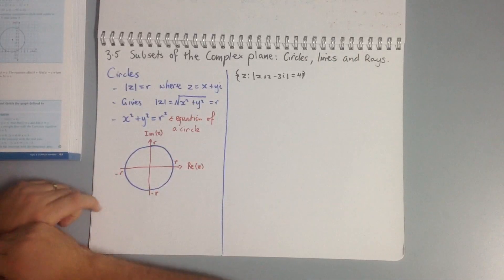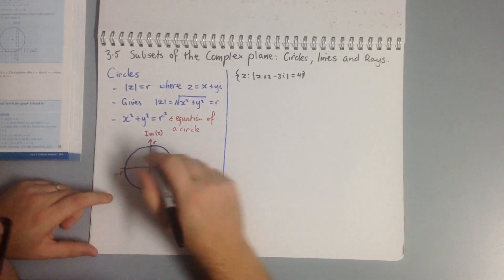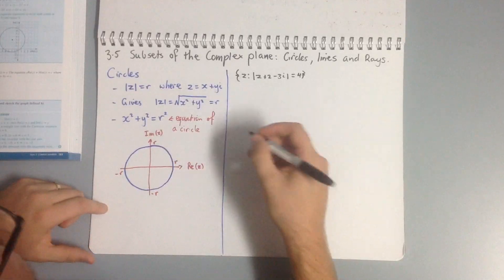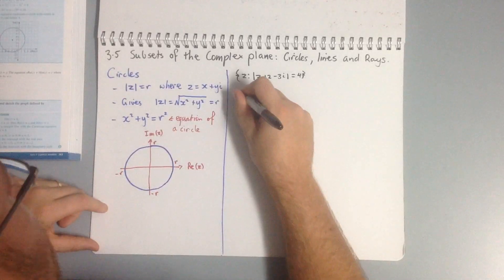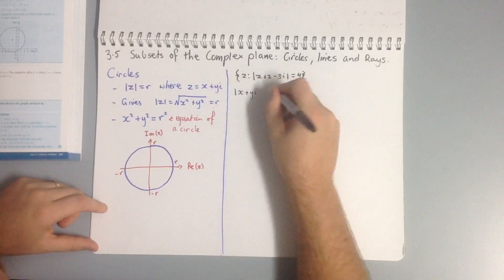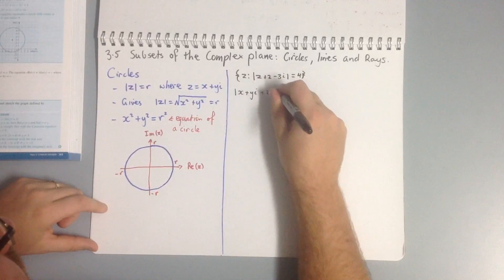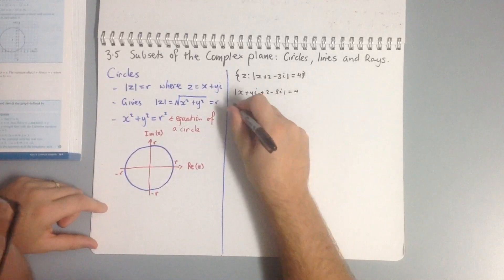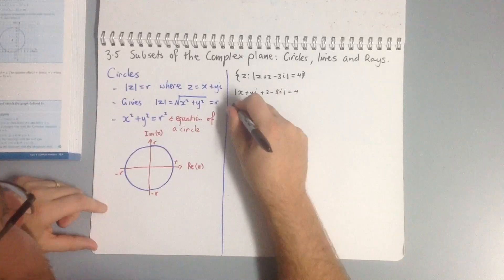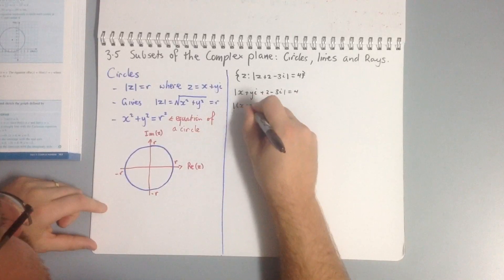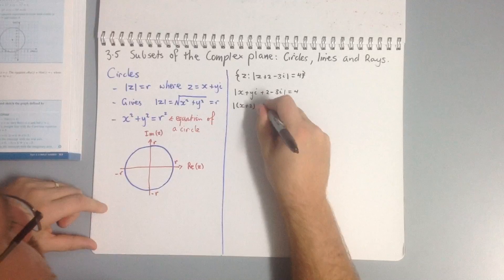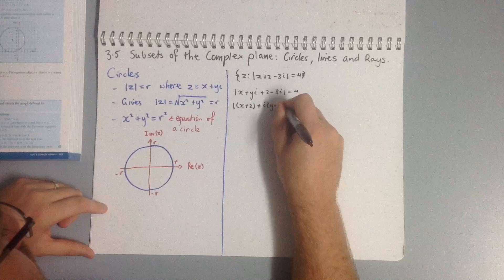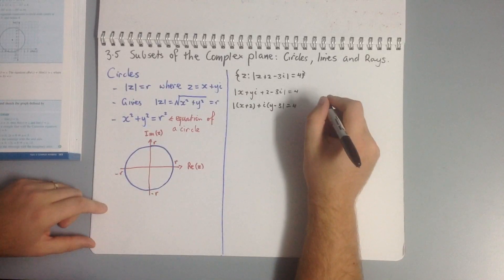We replace z with x plus yi, giving us the modulus of x plus yi plus 2 minus 3i equals 4. Collecting like terms gives us the modulus of (x plus 2) plus i(y minus 3) equals 4.